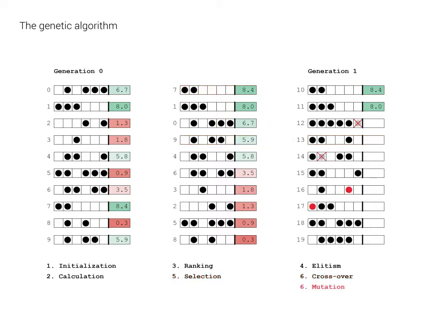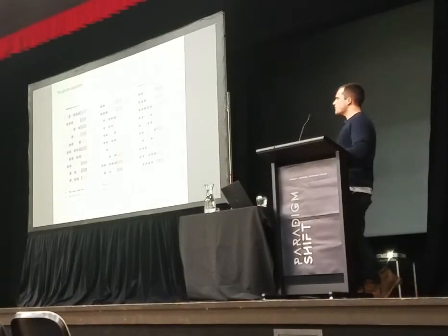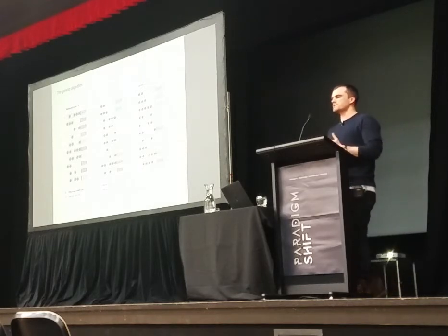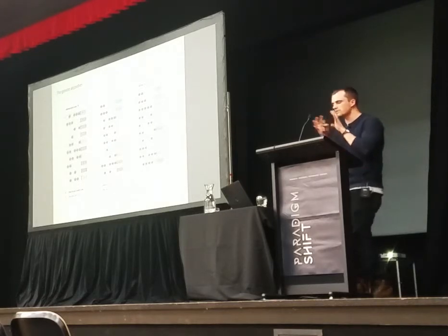The genetic algorithm uses this crossover operation to develop the next generation of designs. We can also use mutation to randomly change some of those switches, introducing new strategies into the process. Once we have the next generation, we score them, rank them, and the whole process begins again. By going through this operation hundreds, even thousands of times over many generations, the genetic algorithm evolves our designs and searches through the species model for good solutions.